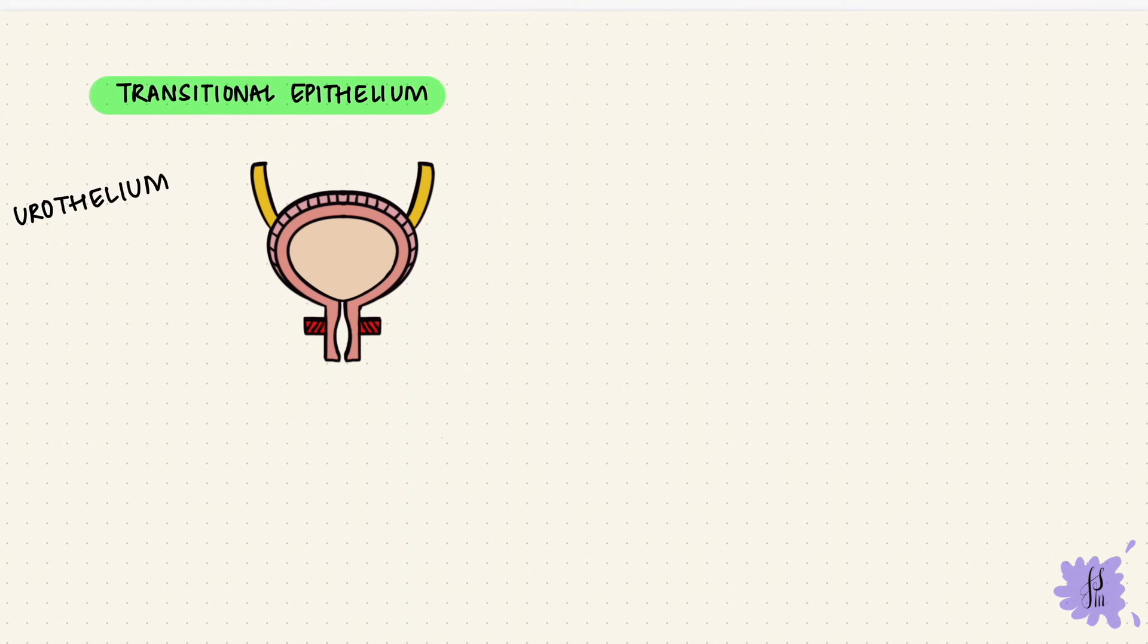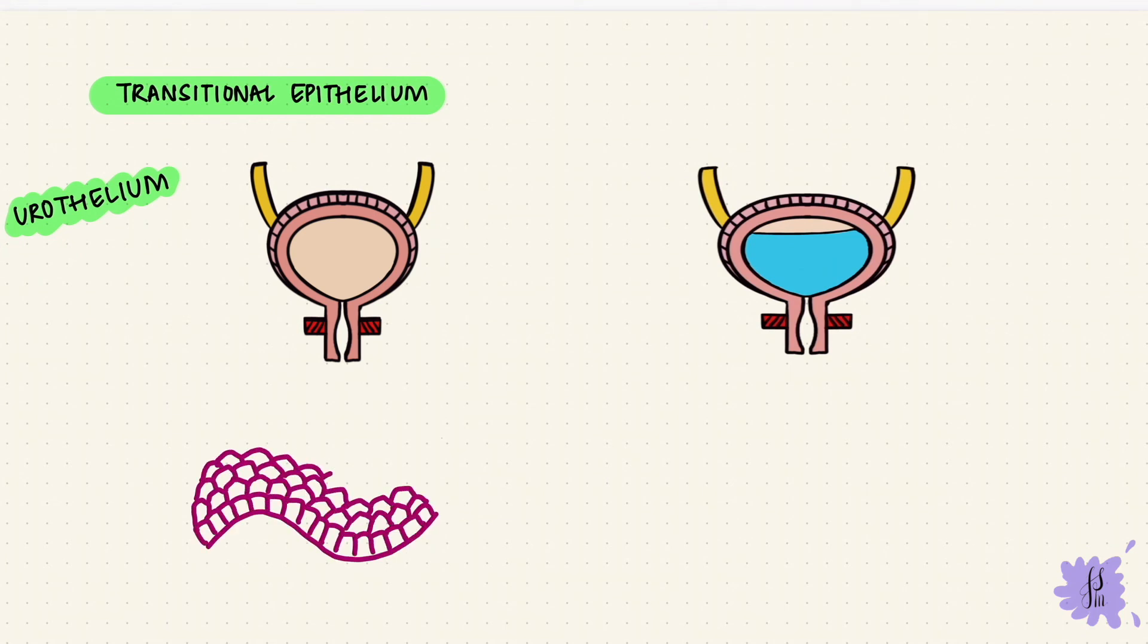Its appearance changes depending upon whether the bladder is full or is it empty. Now when the bladder is empty, it looks like there are many layers. The cuboidal cells on the basal there, the polygonal cells above that, and those topmost cells, they look like little umbrellas. So they are umbrella-shaped cells.